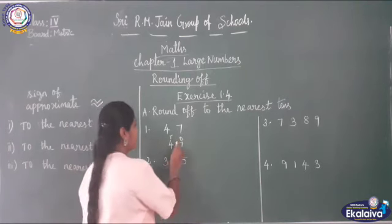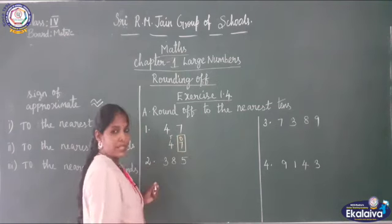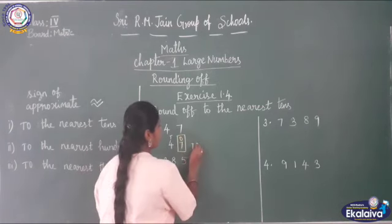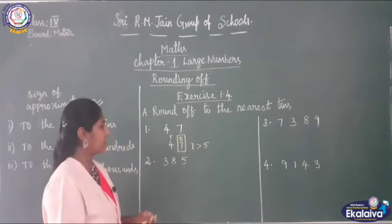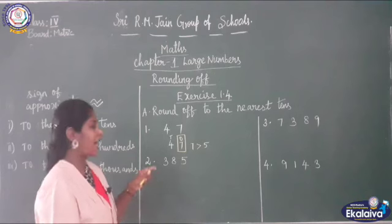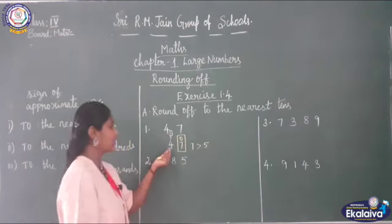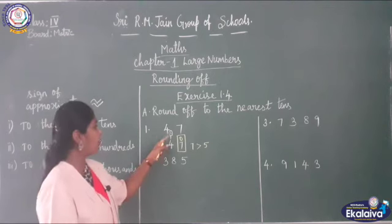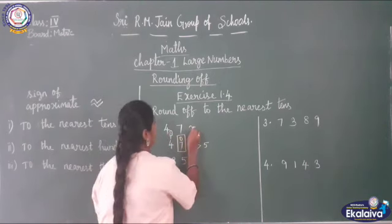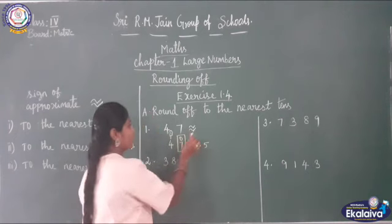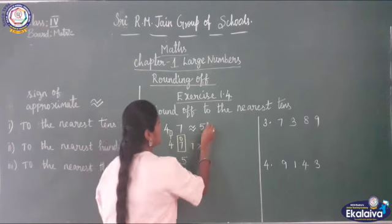Now check the ones place of 47. 7 is greater than 5, so you will add 1 to the tens place. 4 plus 1 is 5, and in ones place you will put 0. So the answer is 50.